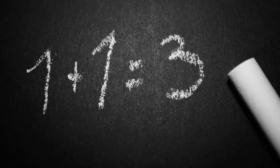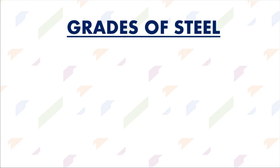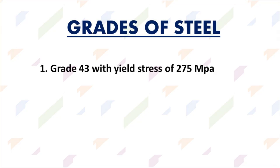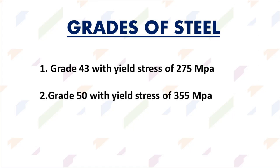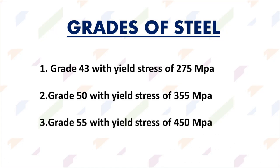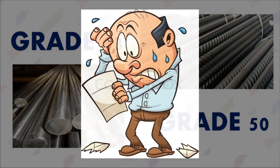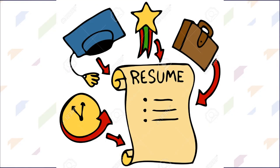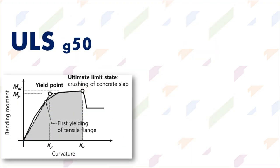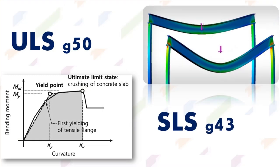To kickstart these basics, let's look at the grades of steel used in the industry. Number one, you have Grade 43 steel, which has a yield strength of about 275 MPa. Then you have Grade 50 with a yield stress of 355 MPa, and last but not least, Grade 55 with a yield stress of 450 MPa. The most commonly used grades are 43 and 50, since Grade 55 is a bit expensive. You will use Grade 50 when designing to ultimate limit state and Grade 43 when designing to serviceability limit state.